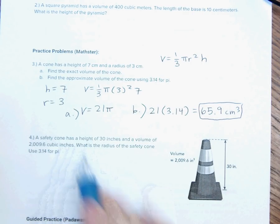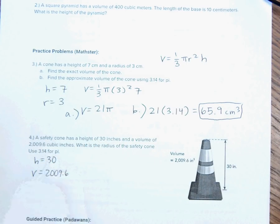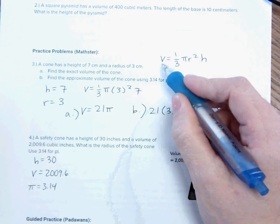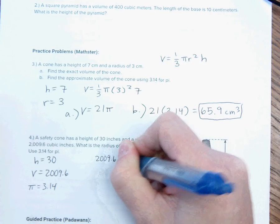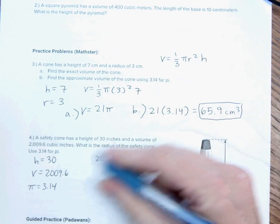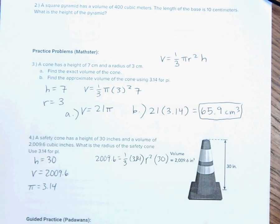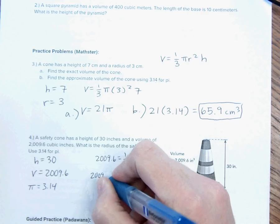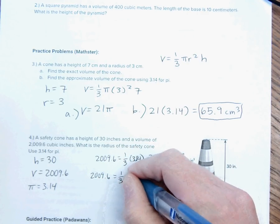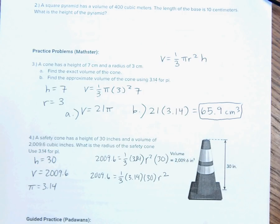If a safety cone has a height of 30 inches, so H equals 30, and a volume V equals 2009.6, what is the radius of the safety cone, use 3.14 for pi. So, I'm going to take my equation again. I'm just going to plug in the numbers. So, V is 2009.6 equals one-third pi is 3.14, 3.14 times r squared times H, which is 30. And sometimes what I like to do is I like to go ahead and write it with my unknown in the back because it does not matter the order of which I multiply.